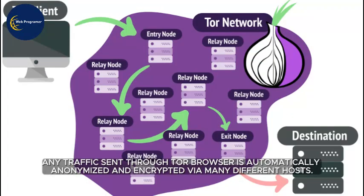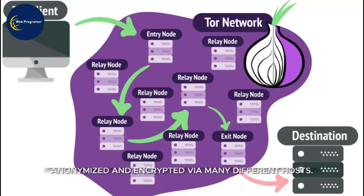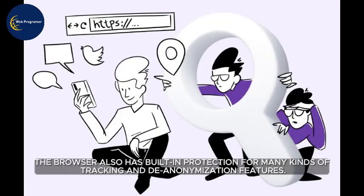Any traffic sent through Tor Browser is automatically anonymized and encrypted via many different hosts. The browser also has built-in protection for many kinds of tracking and de-anonymization features.